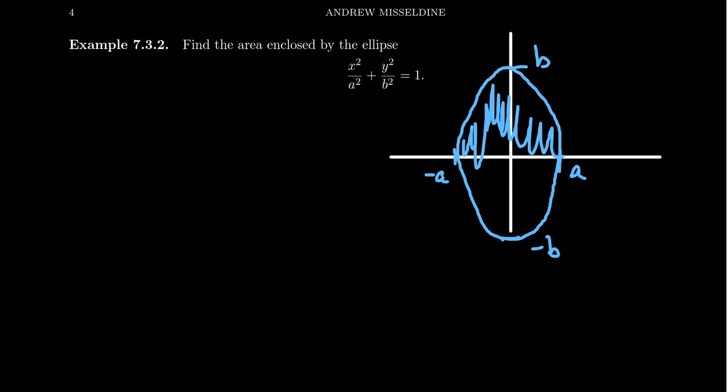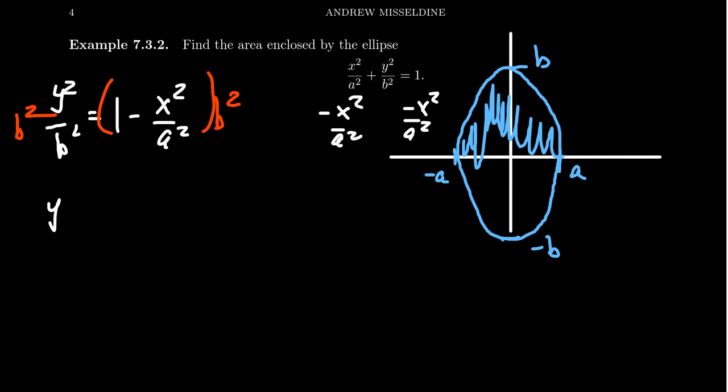If you solve for y, you would subtract x squared over a squared from both sides. This gives us y squared over b squared equals one minus x squared over a squared. Times both sides by b squared.